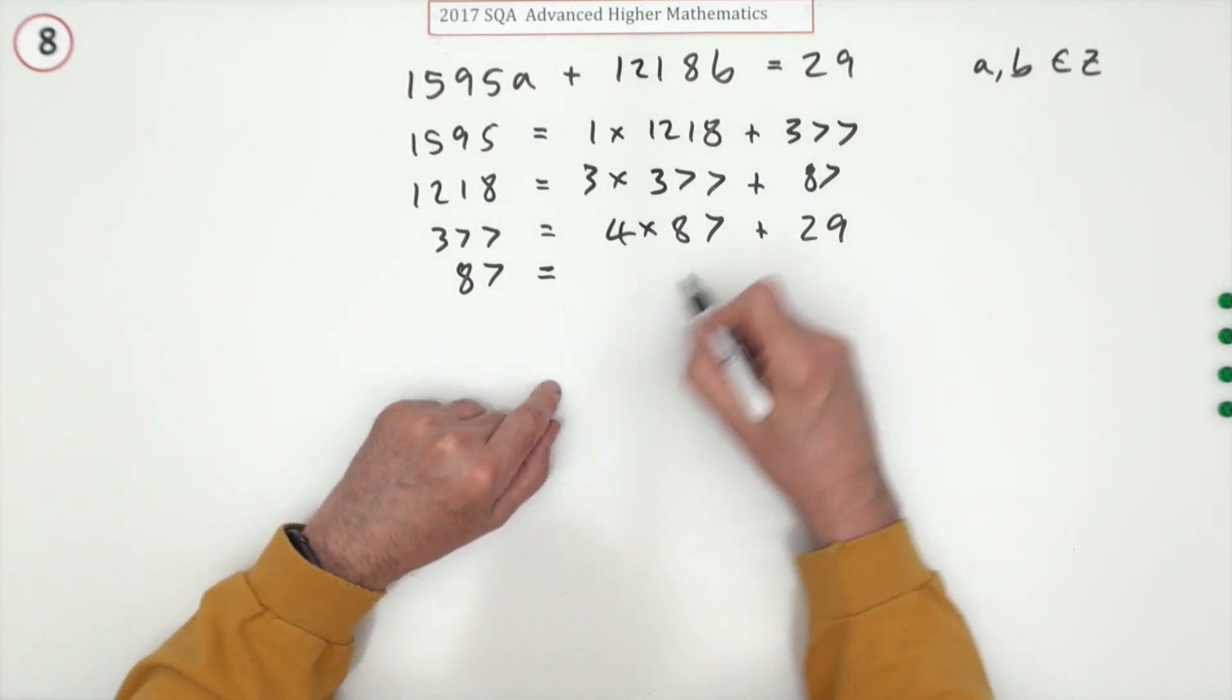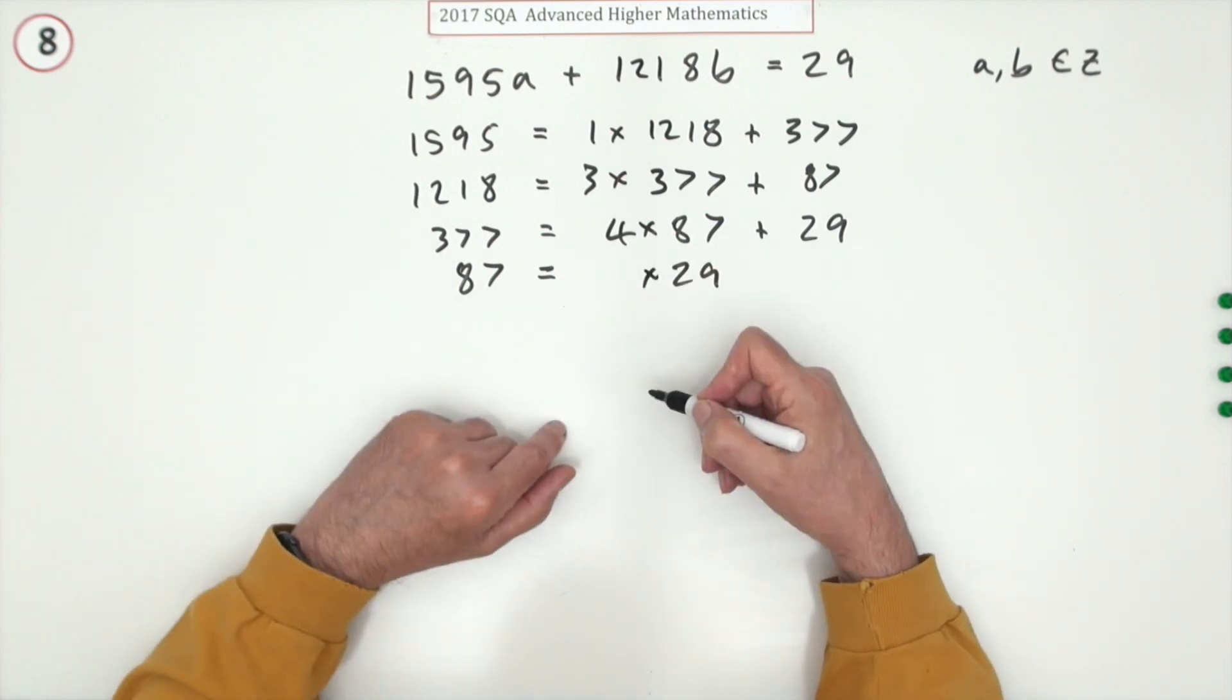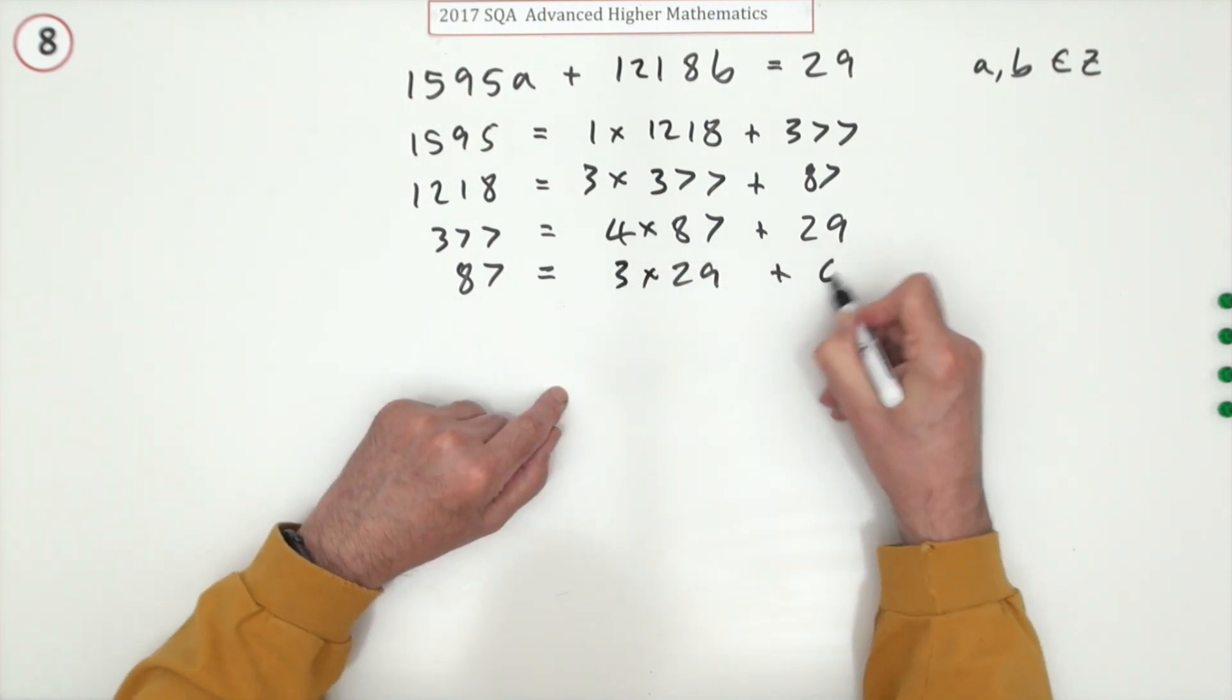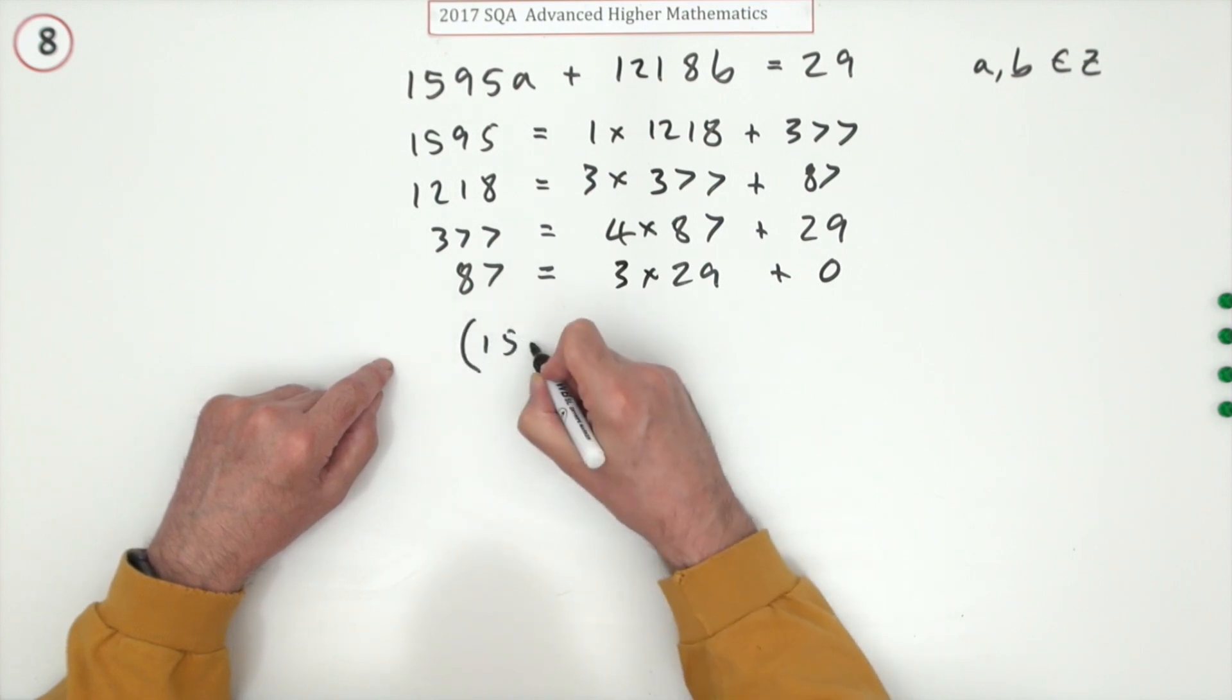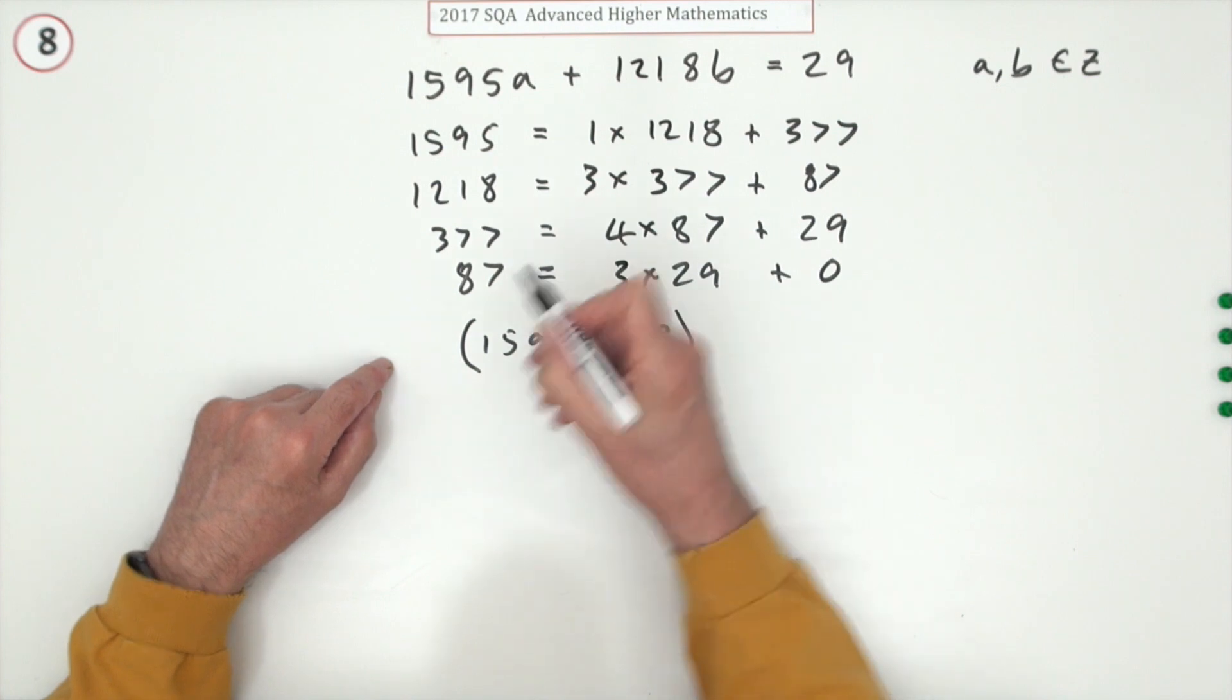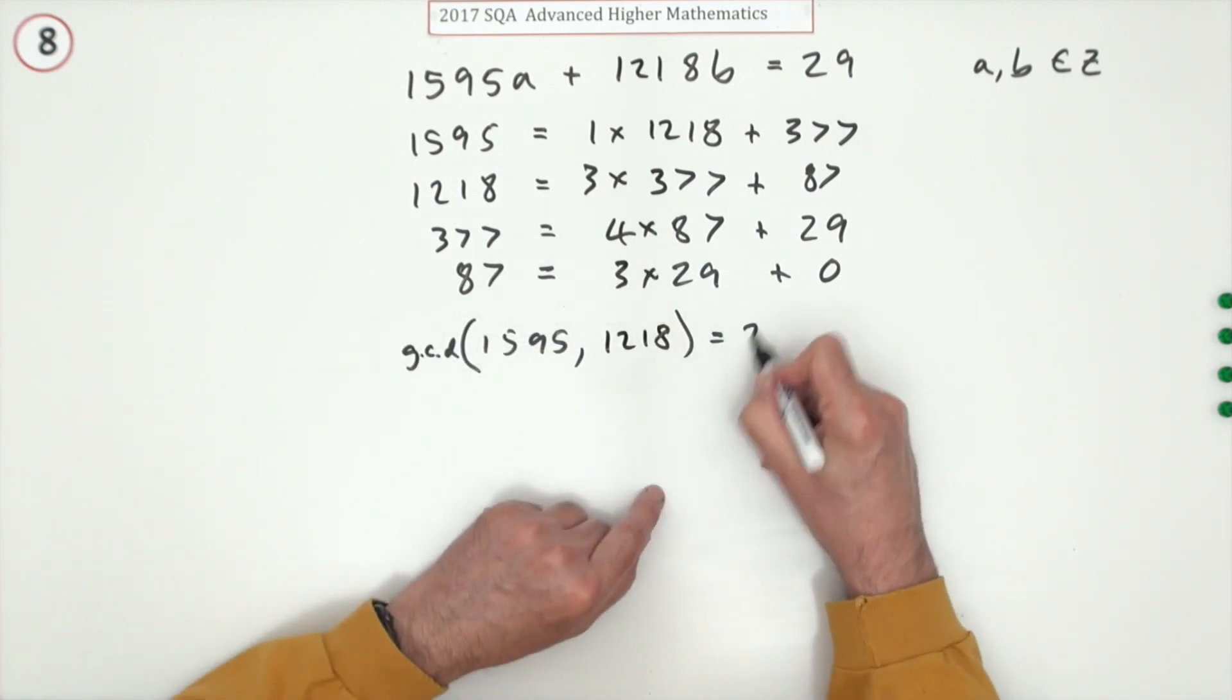So now we check again with those two. It's down to just 87 and 29. If 29 goes in exactly, then that's it - 29 is the answer. And it does, that's three times it, 27 carry 2, so plus zero. That means the greatest common divisor of 1595 and 1218 is 29.